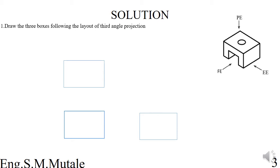For the plan elevation it should take the plan elevation dimensions, and for the end elevation you should also take the dimensions of the end elevation. When you have a question it will have those dimensions indicated, so you measure them and draw the boxes representing each view accordingly.